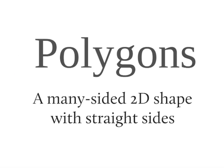So let's have a look at polygons now. They are 2D shapes with straight sides. So a many-sided 2D shape with straight sides is called a polygon. Now we group polygons into families that are based on how many sides they have.